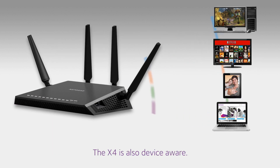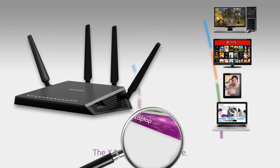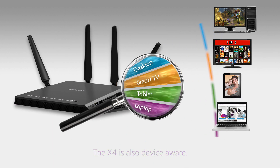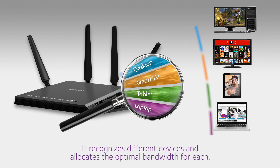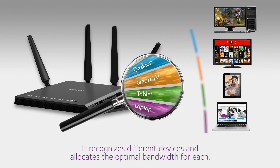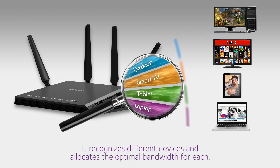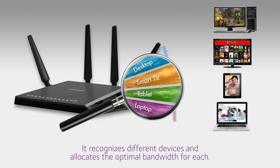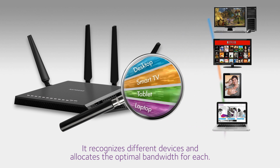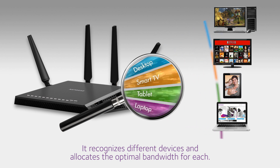Third, the X4 is device aware. It recognizes different devices and allocates the optimal bandwidth for each. If the same Netflix app is streaming to a TV and a laptop, the X4 gives the optimal bandwidth to the TV.